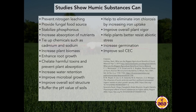Looking at all these various benefits, humic substances have been documented as being able to prevent nitrogen leaching, stabilize phosphorus, increase absorption of nutrients, tie up toxic elements in the soil profile such as cadmium and sodium, increase plant biomass, enhance root growth, act as a powerful chelation agent to chelate toxins and prevent plant absorption, increase water retention, microbial growth, soil structure, and buffer pH values. There's one point not explicitly stated but implied.